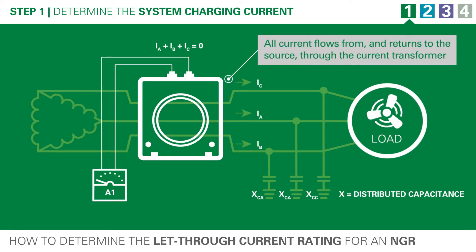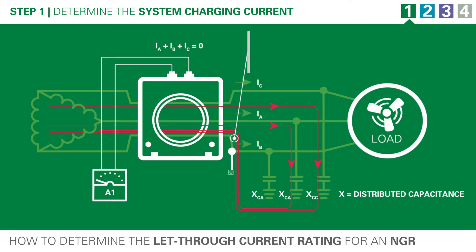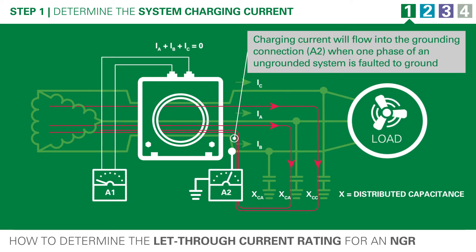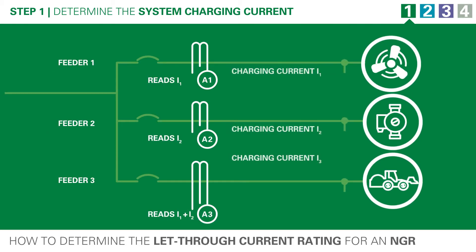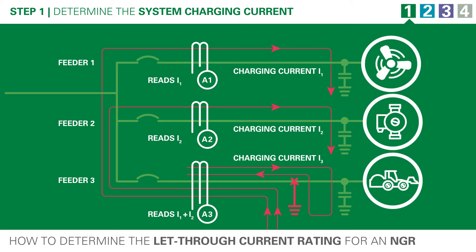This capacitance is distributed through the system and is what references an ungrounded transformer or generator to ground. When a ground fault occurs on this ungrounded system, the voltage on the remaining phases rises and the fault current flowing through the ground fault is the charging current. When we consider a ground fault on a system with multiple feeders, a ground fault relay on an unfaulted feeder will read that feeder's charging current, and a ground fault relay on the faulted feeder will read the sum of all the charging currents from the unfaulted feeders.